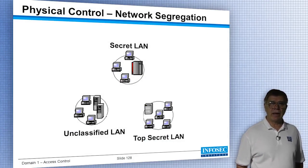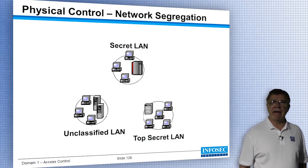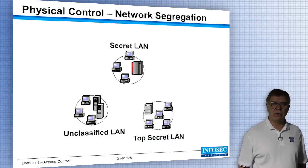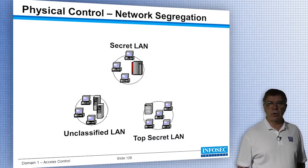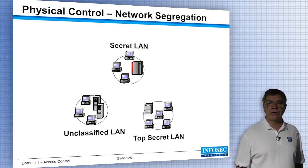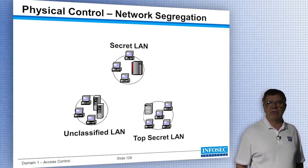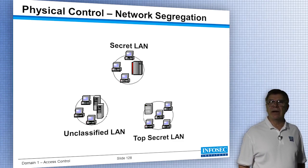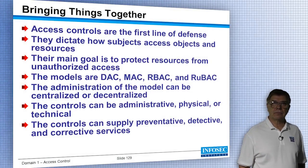Network segregation can be physical or logical. A virtual LAN for top secret, a virtual LAN for secret, and a virtual LAN for public or unclassified data — those are examples of logical network segregation.